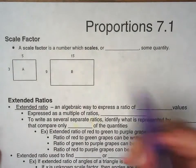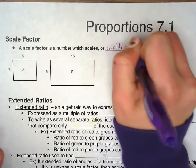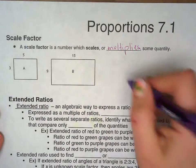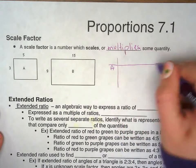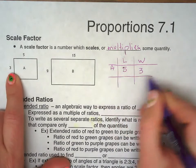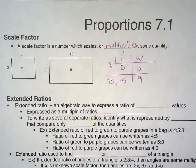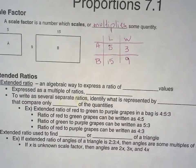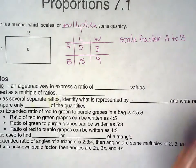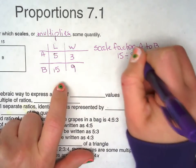Scale factor. So scale factor is the number that scales or multiplies to get the other number. Here we have two rectangles, rectangle A and rectangle B. We're going to set up a proportion. Rectangle A, we have length of 5 and width of 3. In rectangle B, we have length 15, width 9. So just one example for you to find the scale factor. The scale factor A to B is going to be 15 divided by 5 is 3.